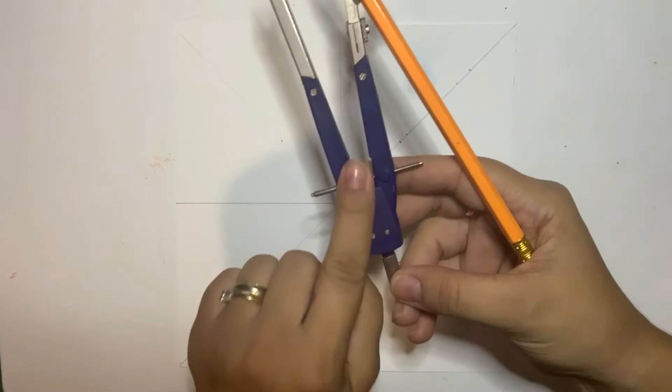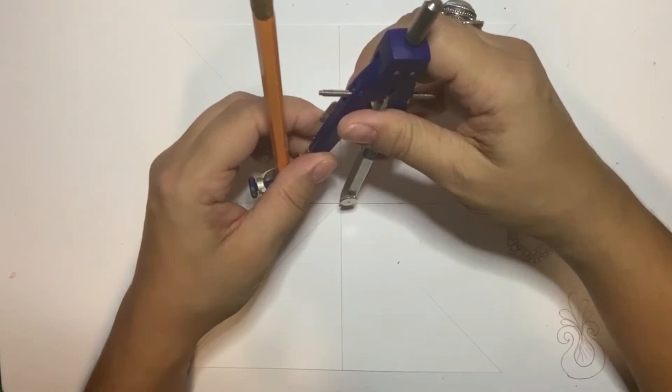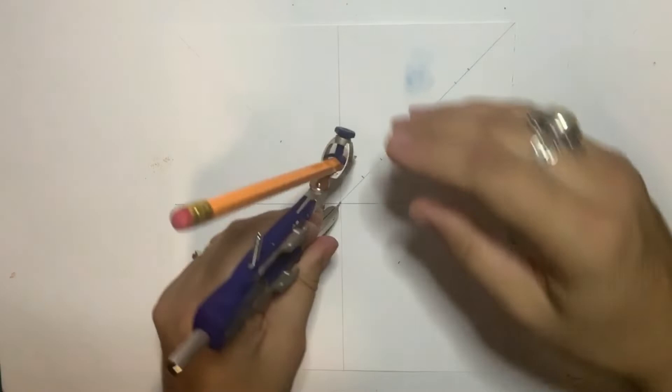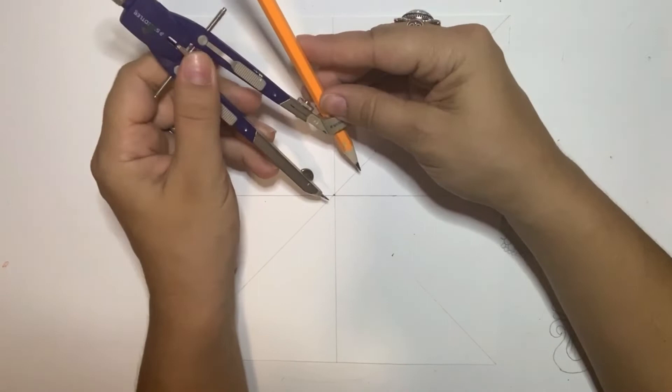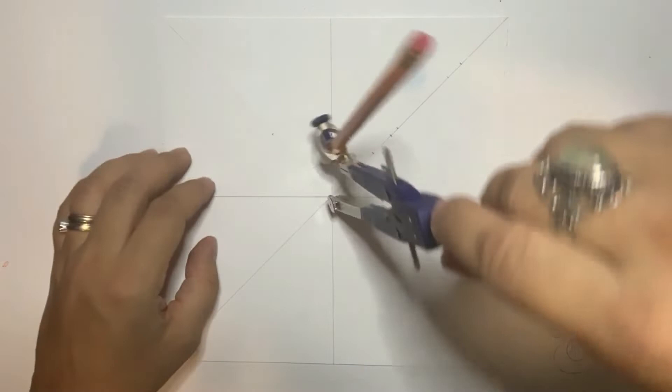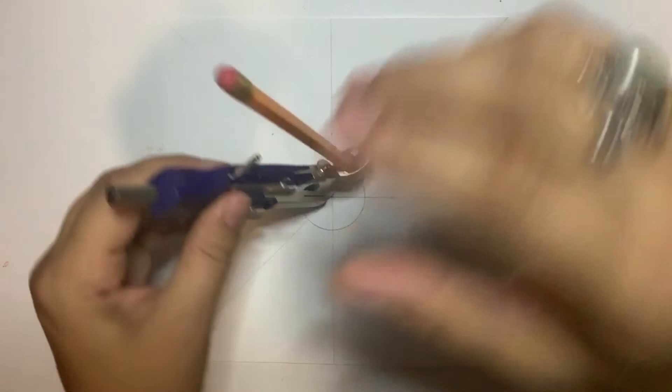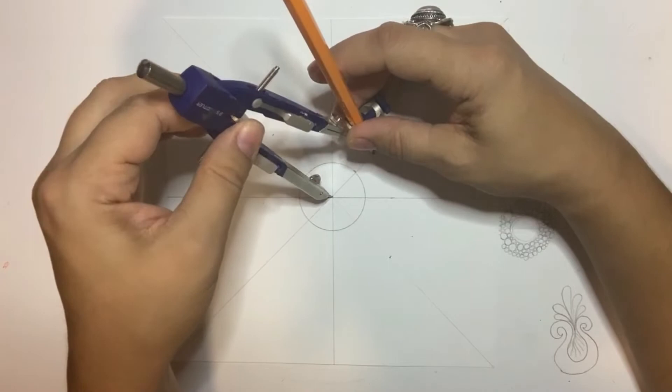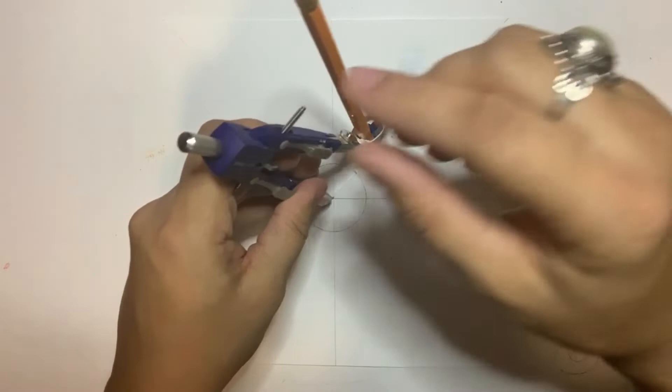Then I use this compass that has this wheel that, you know, is like a brake. So I'm gonna put the metal point here in the middle and I'm going to adjust the compass to the marks that I've made. The first one is two centimeters, and then I make a circle.